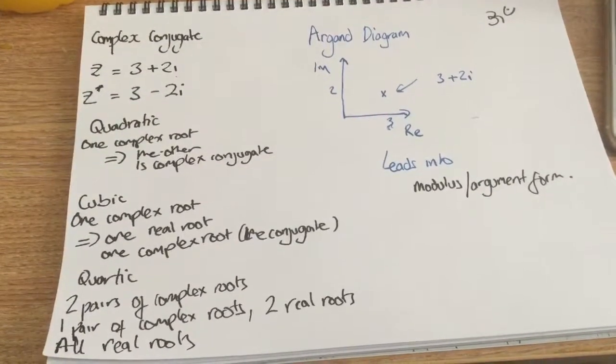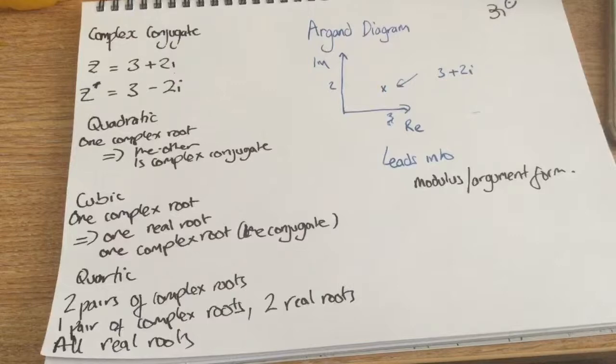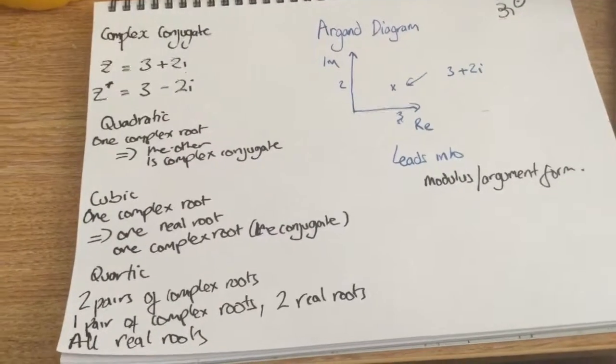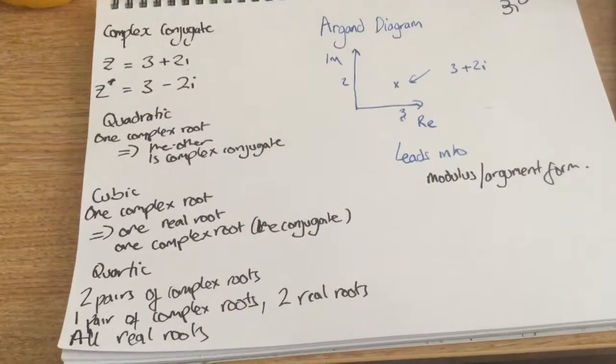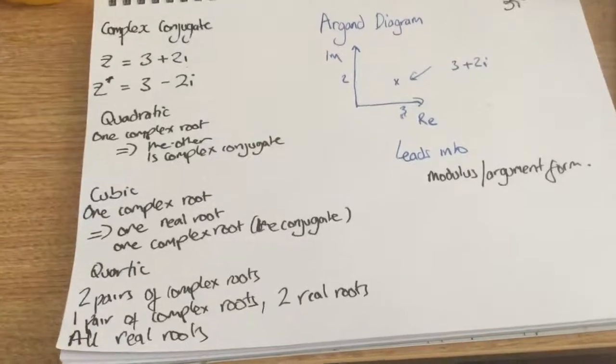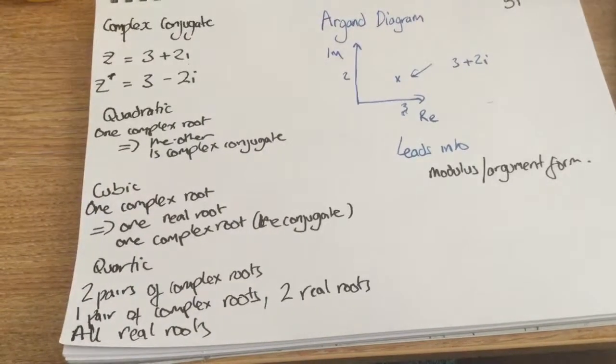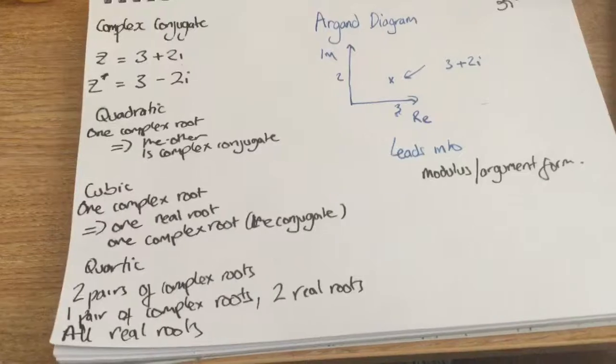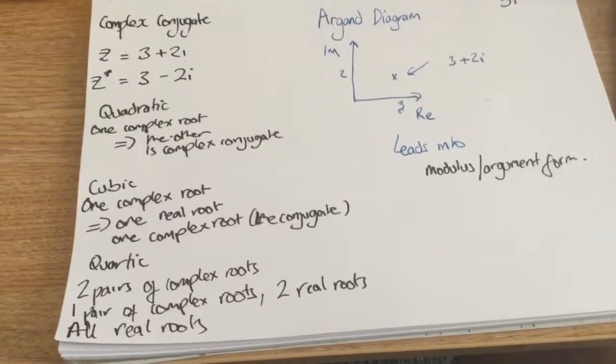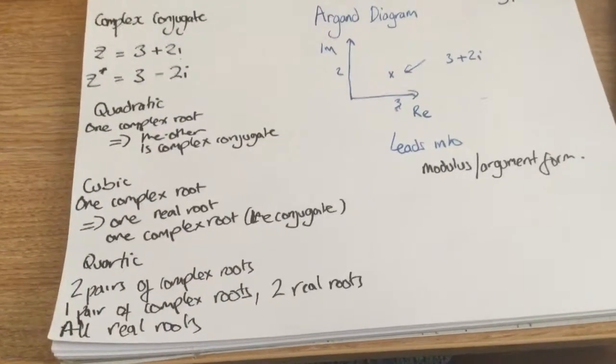Okay guys, so here we are, complex numbers part three. We're going to talk about complex conjugates, which we've mentioned twice already in both previous videos, but this one in a bit more detail and why it's important. And then a very brief outline of what the Argand diagram is and how we can use that to plot complex numbers.